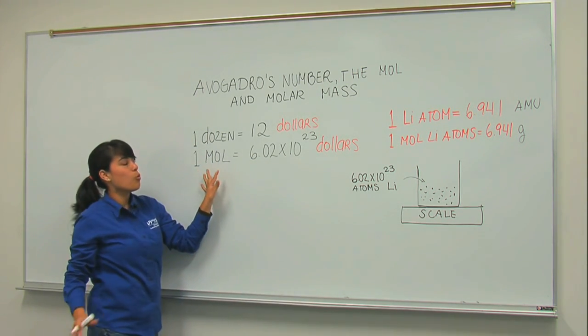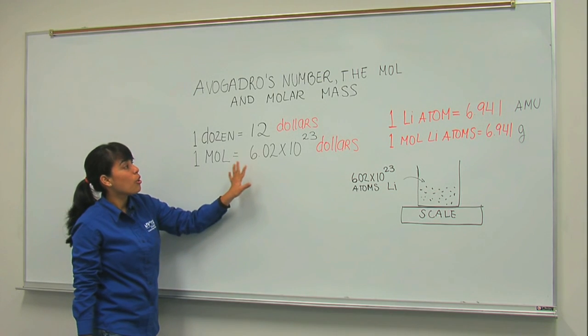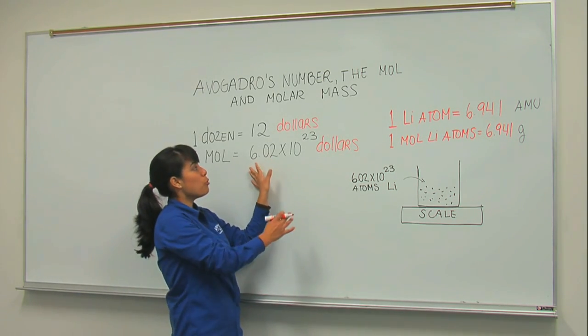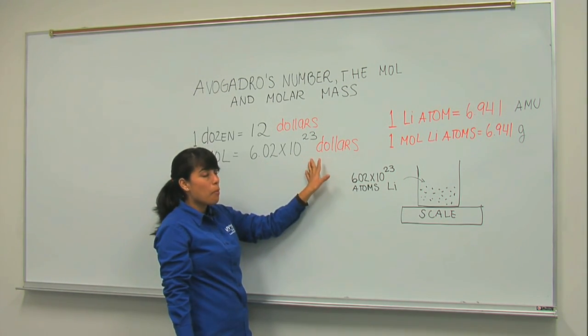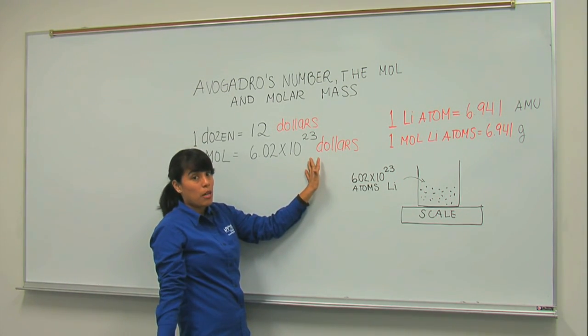If you tell me that you want a mole of lithium atoms, you would be telling me that you want to get 6.02 times 10 to the 23 number of lithium atoms.